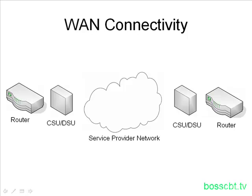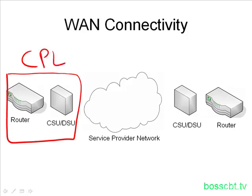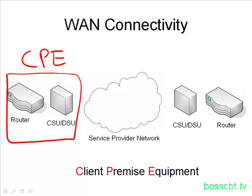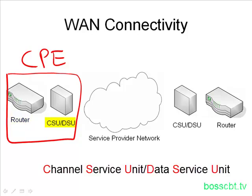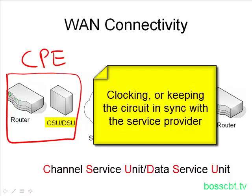Let's take a look at some of the components. First, we have the CPE — Client Premise Equipment. This is all the equipment that resides at the client's network. If you're the enterprise and you purchased a point-to-point circuit from the telecom provider, your equipment is referred to as the CPE. The service provider doesn't manage it — it's yours. The CPE has two parts: a router, which handles routing and other functions, and the CSU-DSU, which is responsible for clocking — making sure it stays in sync with the service provider network and the other end of the circuit.